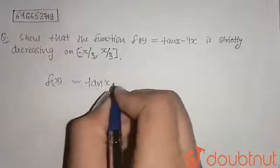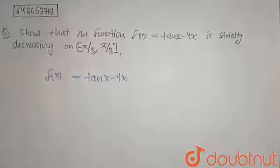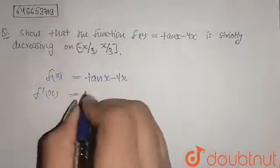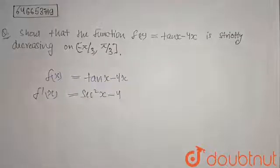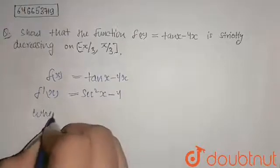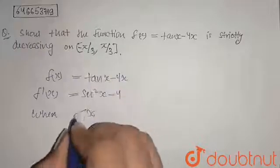Now when you differentiate this equation, I will get f'(x) = sec²(x) - 4. Now when the condition is given that x is greater than -π/3 and less than π/3...